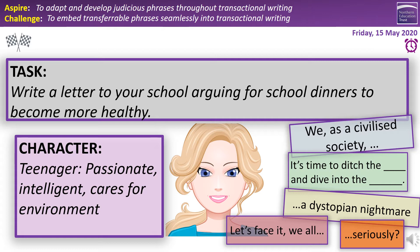Our character is passionate and intelligent and cares for the environment, so they're going to argue that dinners should be more healthy. You could pick any of those phrases — 'We as a civilized society need to start prioritizing our diets' would be nice, or even more specific: 'We as a civilized academy.' 'It's time to ditch the sugar and dive into the future' might work. 'If we don't change our school dinners, we are heading towards a dystopian nightmare.' Or combine them: 'Let's face it, we all like a good chocolate bar every now and again. However, too many of these could cause a dystopian nightmare in the future.' And with sarcasm: 'School dinners are delicious. Seriously?' Any of those would fit — try to adapt and change them.